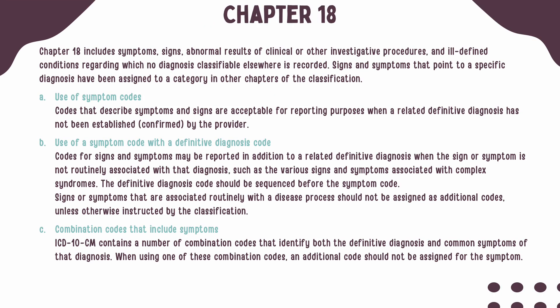Codes from Chapter 18 include signs, symptoms, and abnormal results of clinical or other investigative procedures and ill-defined conditions that have no diagnosis classifiable elsewhere. Codes that represent signs and symptoms should only be coded when there has not been an established or confirmed diagnosis by the provider. Codes for signs and symptoms may be reported in addition to a definitive diagnosis when the sign or symptom is not routinely associated with that diagnosis.